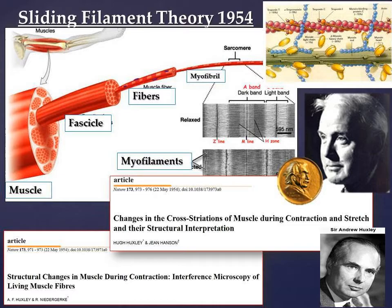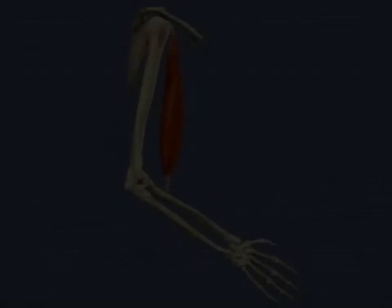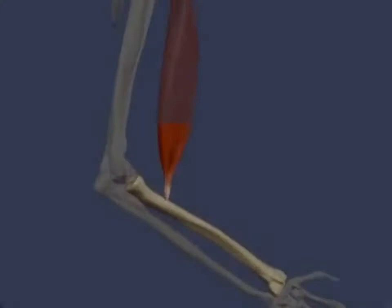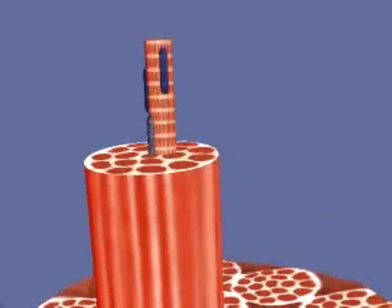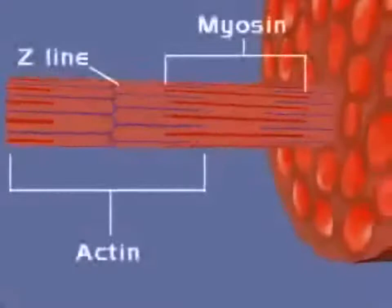We've learned a lot more about muscle contraction since 1954. The muscle is made of bundles of fibers called fascicles, and the individual fibers are made of even smaller myofibrils, which contain the basic unit called sarcomeres. These sarcomeres are enveloped in a sarcoplasmic reticulum, and inside they contain the thin filament actin and the thicker filament myosin.